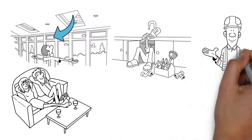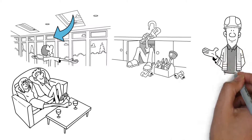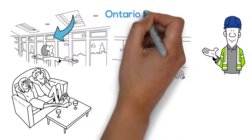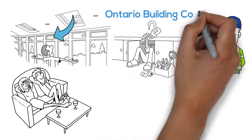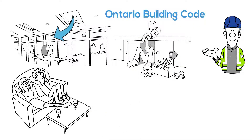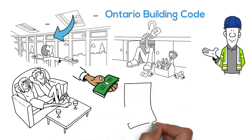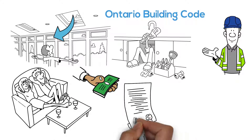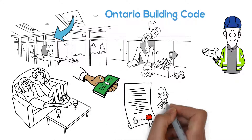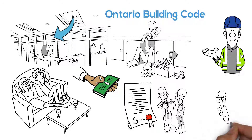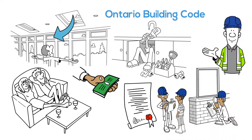The role of the municipality is to administer the Ontario Building Code. The municipality sets fees, reviews, and issues permits, and inspects sites for compliance during and after construction.